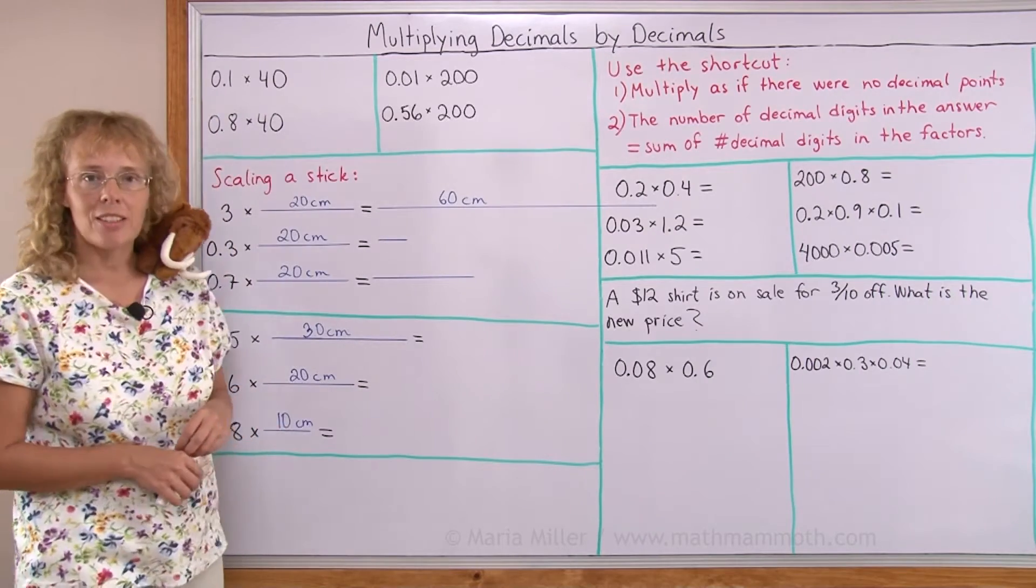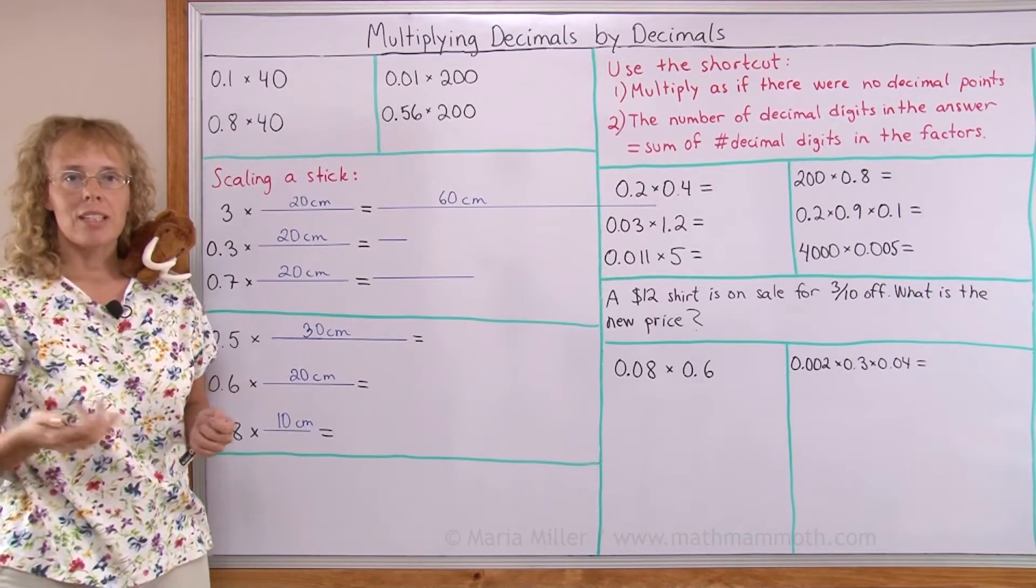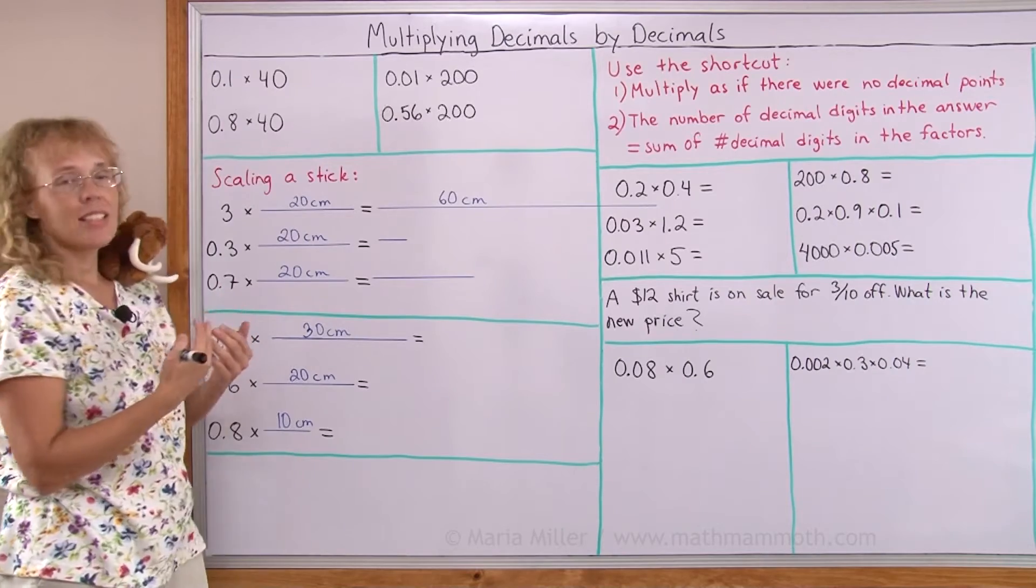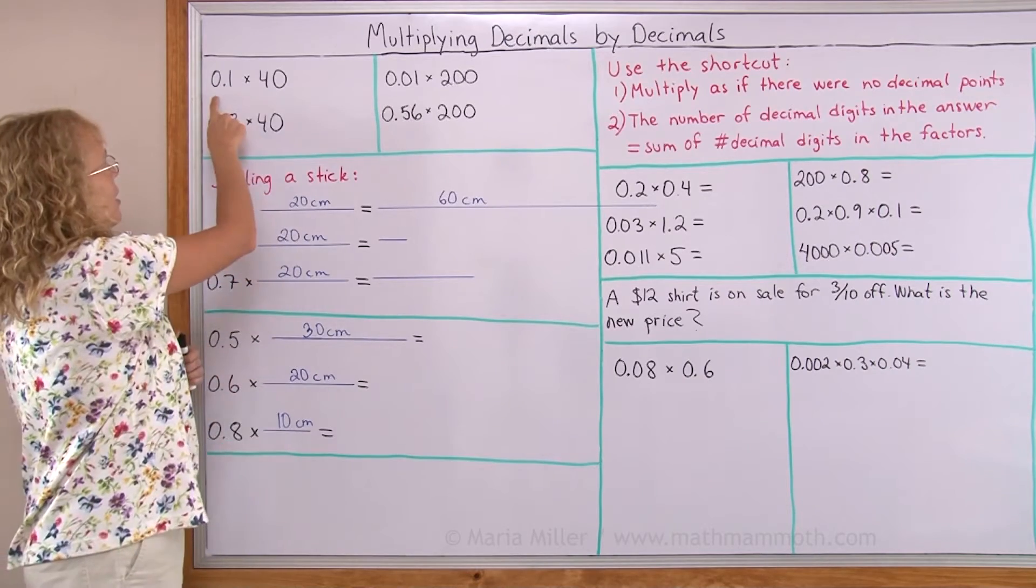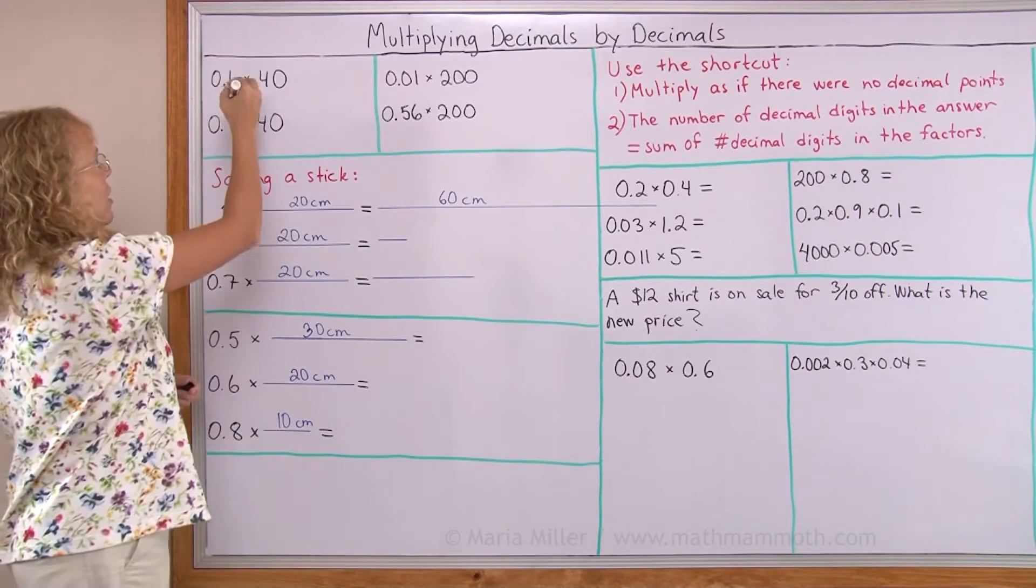Now, for starters I have a decimal multiplication here, 0.1 times 40. Remember that decimal is read as 1 tenth. And the basic idea here is that when we are multiplying a decimal times something, we think of the multiplication as of.